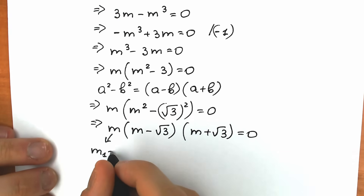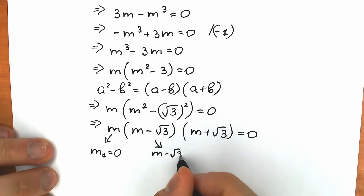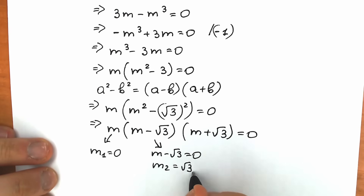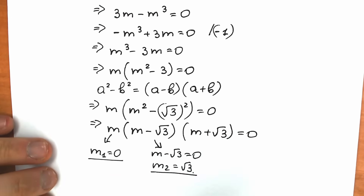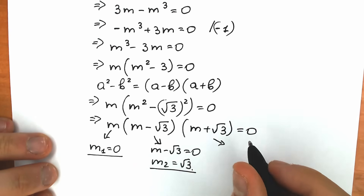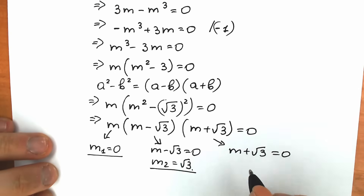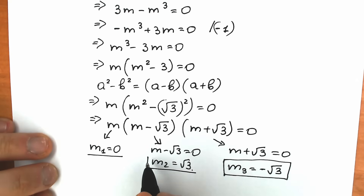So we find three solutions: m₁ equals zero from the first factor; m₂ equals square root of 3 from m minus √3 equal to zero; and m₃ equals minus square root of 3 from m plus √3 equal to zero. It looks like we have found three roots. Let's check them.